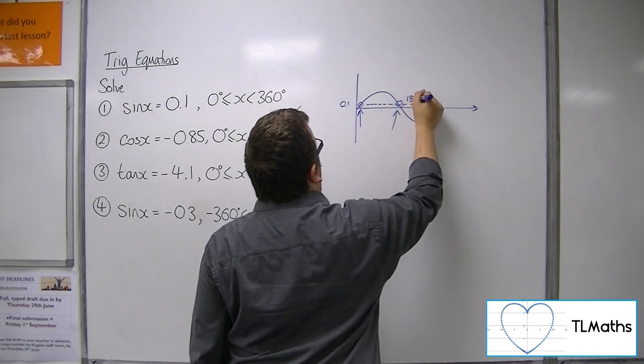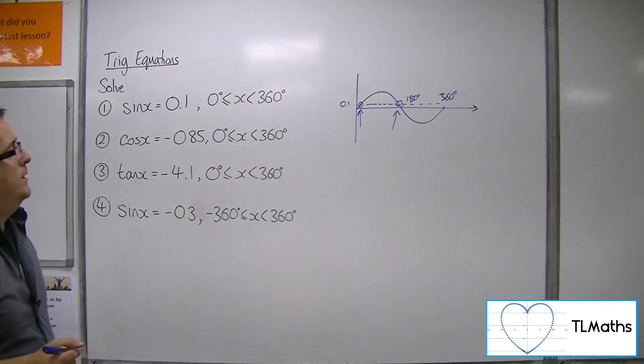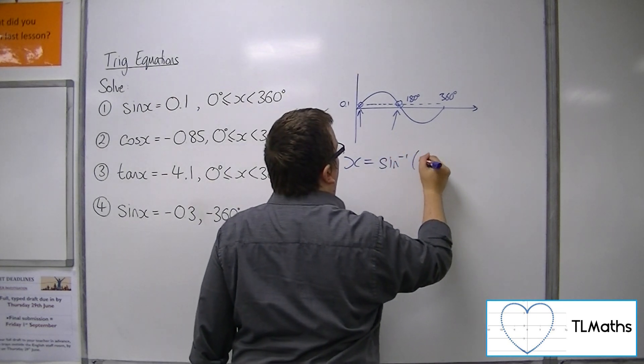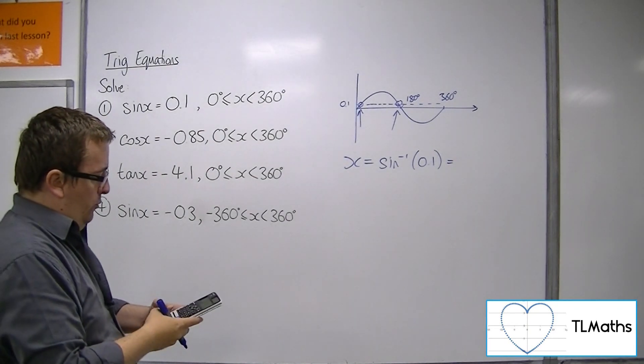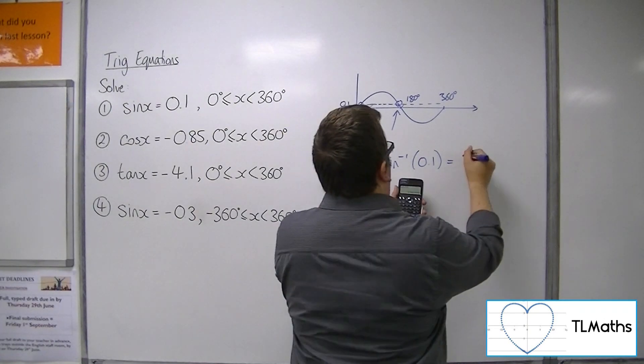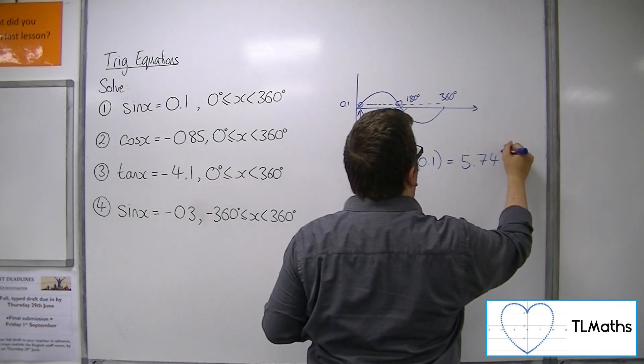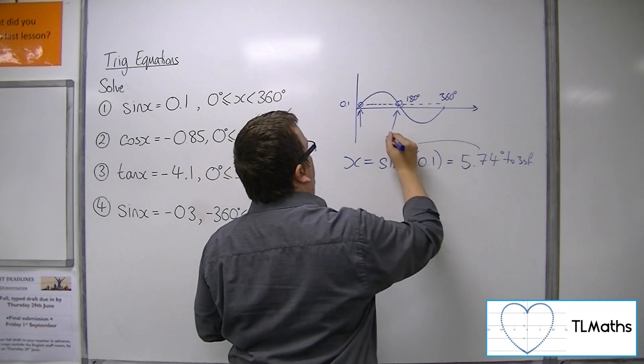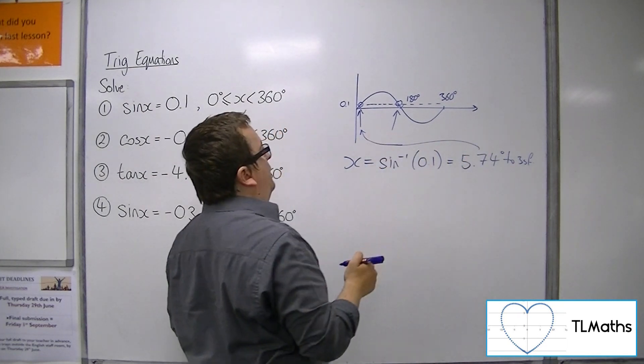Now that, of course, is 180, and there's 360. So we can inverse sine both sides of 0.1. Inverse sine 0.1 is 5.74 degrees to three significant figures. So that is the first one, that one there.